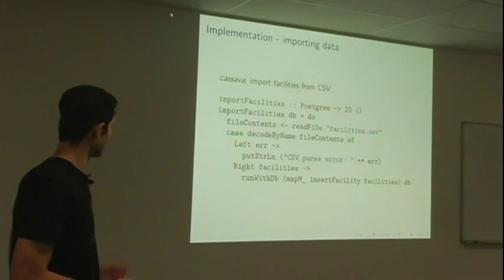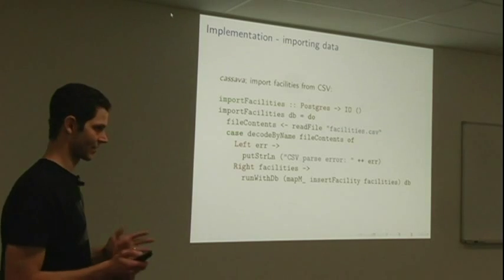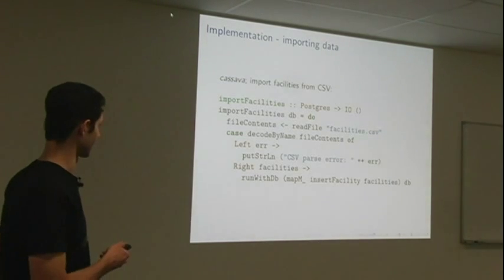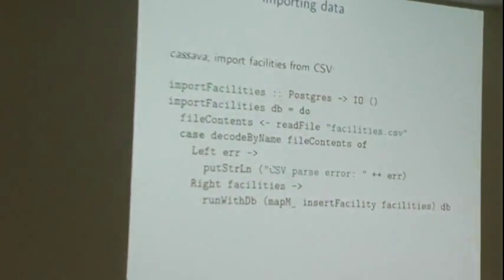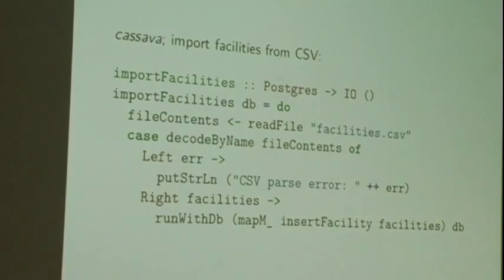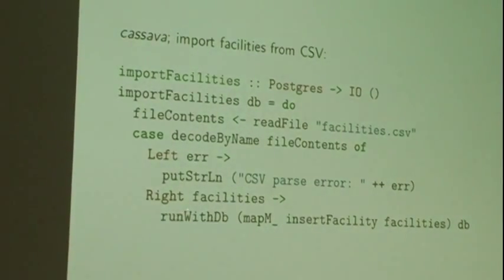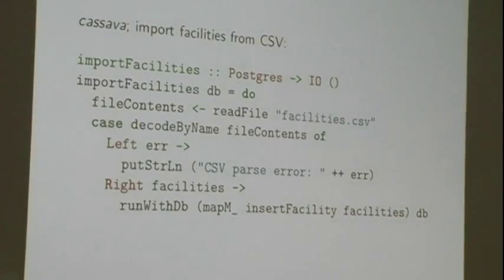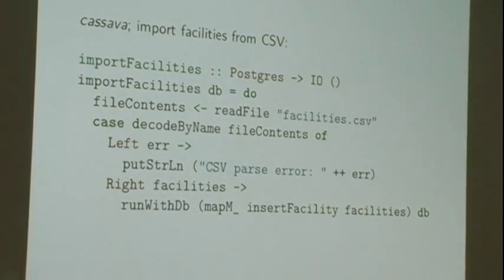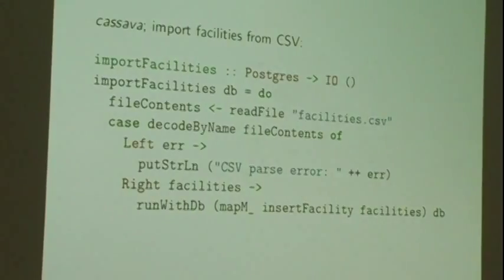To parse the facilities, you can see we're reading the file here, facilities.csv. We're calling this function decode by name with the file contents. If there's an error, we're just going to print CSV parser to the terminal. Otherwise, we're going to run with DB, and we're going to map over each of these facilities that comes out and insert it into the database. So this is just part of the import script.